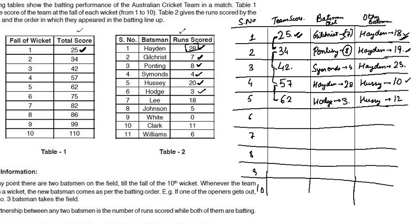The next wicket fell at the score of 75, a difference of 13. Lee scores 18 runs, but Lee cannot be the person out at 75 because the difference is only 13. So Hussey must have got out at 75, needing 8 more runs. Hussey scored 8 more runs, giving him 12 plus 8 = 20. The other 5 runs were scored by Lee, so Lee scored 5 runs so far.